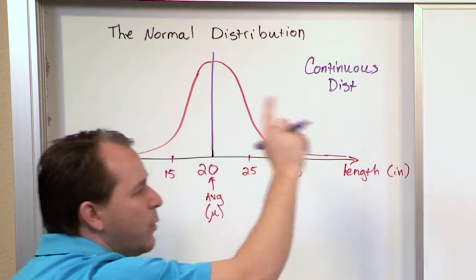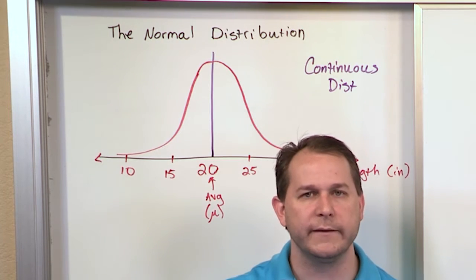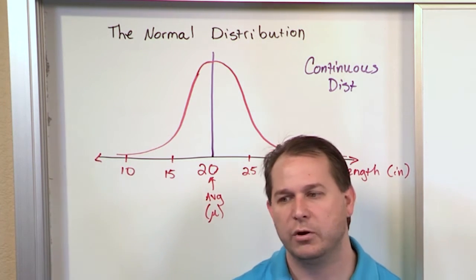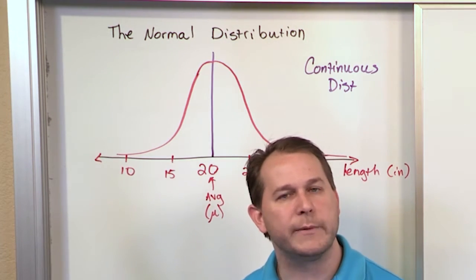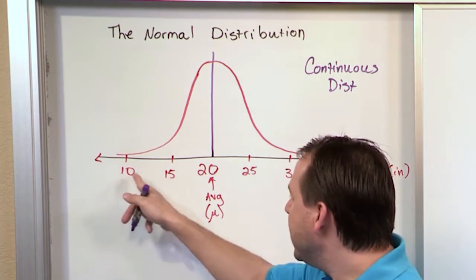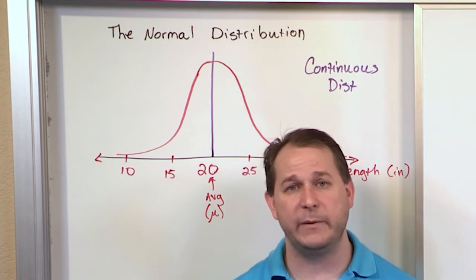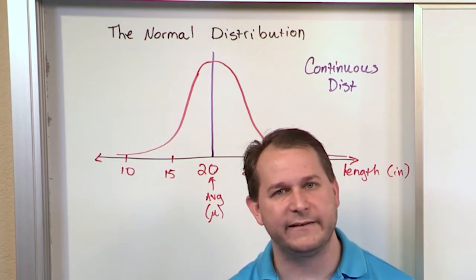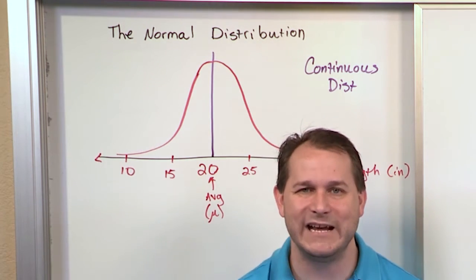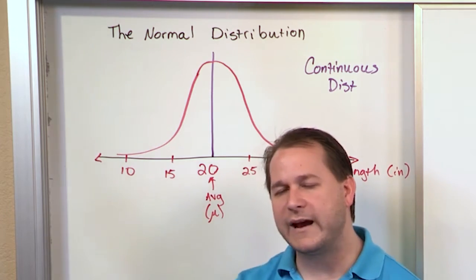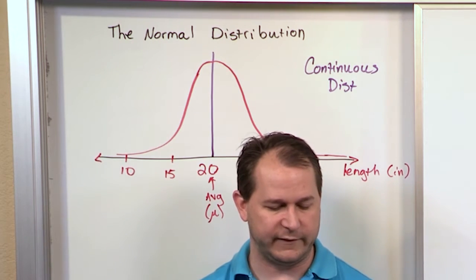In the last lesson, the experiment was totally different — we threw coins and only had certain kinds of results: zero heads, one head, two heads, or three heads, with no in between. But with watermelons, they could be 10 or 15 or 20 or 25 or 35 inches, or any length in between. It's not discrete anymore — it's called continuous. And in real life, almost everything is a continuous probability distribution that looks like this kind of curve, which is why we study it so much in statistics.